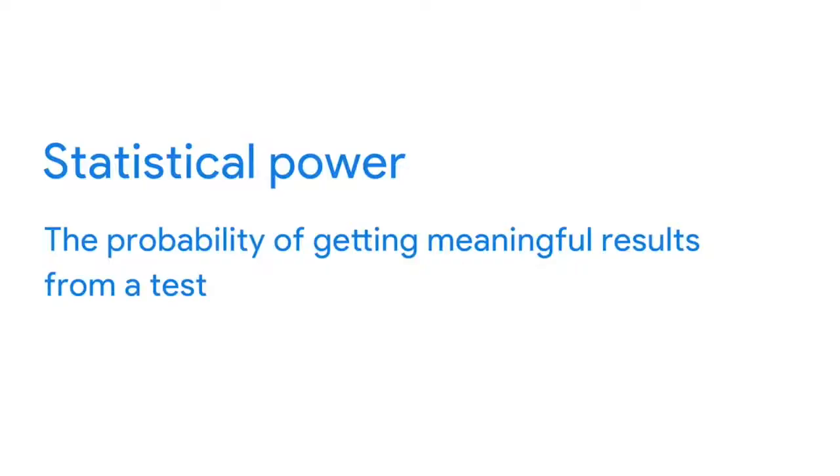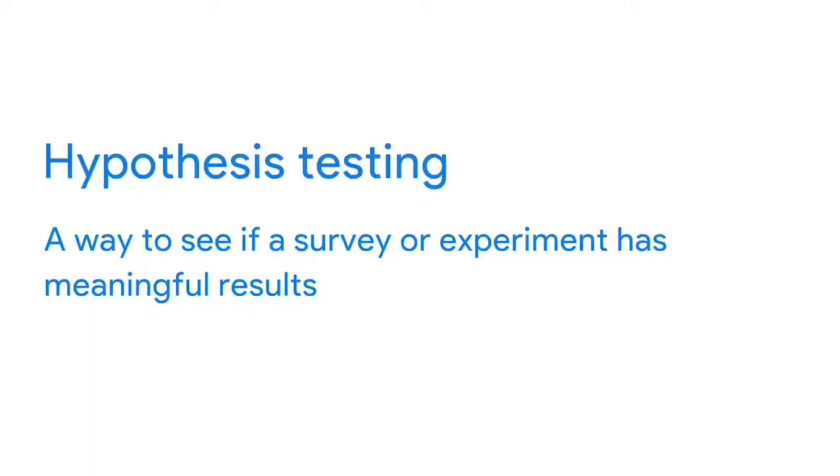We've all probably dreamed of having a superpower at least once in our lives. But there's another superpower you might not have heard of: statistical power. Statistical power is the probability of getting meaningful results from a test. For data analysts, your projects might begin with a test or study. Hypothesis testing is a way to see if a survey or experiment has meaningful results.